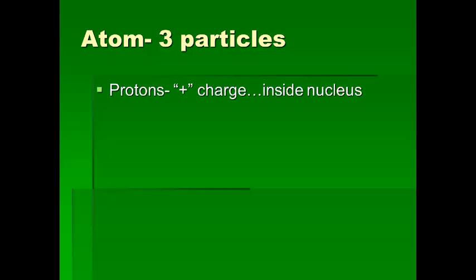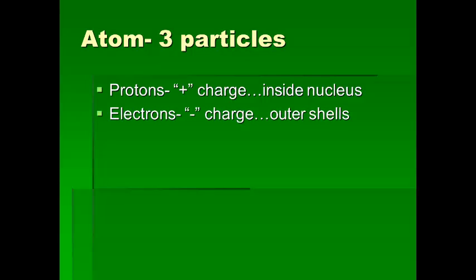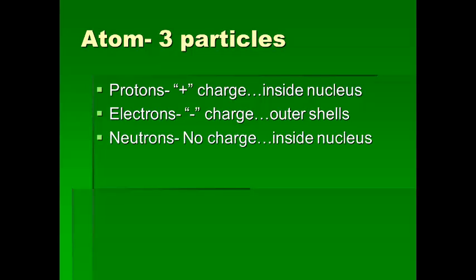The first thing you need to know is that in an atom there are three particles. The first is a proton, which is a positively charged subatomic particle found in the nucleus. We also have electrons, which are negatively charged particles found buzzing around in the outer orbit of the atom. And then neutrons, which have essentially no charge.